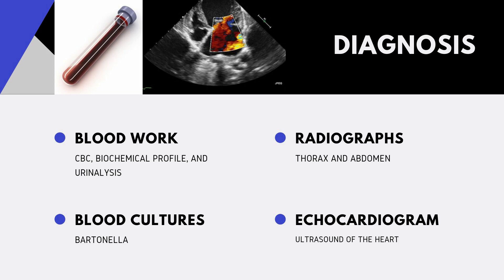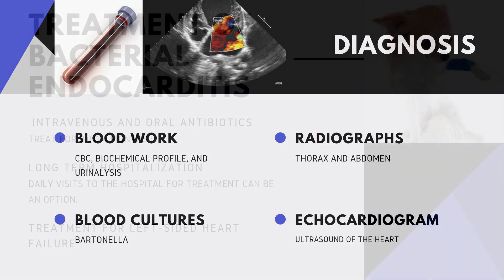Blood work and bacterial cultures are often done to look for infections. Blood may be submitted to test for Bartonella or other bacteria. Thoracic and abdominal radiographs are also important. An echocardiogram is needed to check the heart valves for signs of infection and leakage. Multiple blood cultures may also be needed to isolate circulating bacteria. If the patient is lame and has swollen joints, radiographs and joint taps with fluid analysis and culture may also be considered.